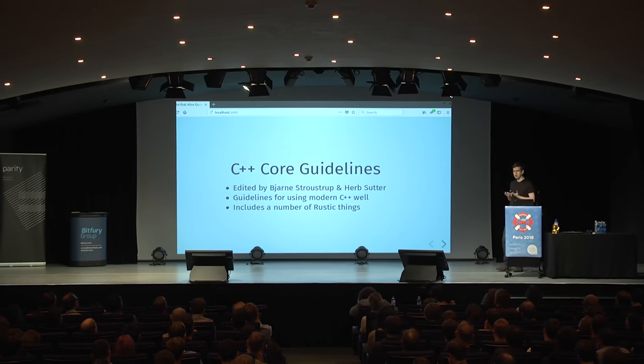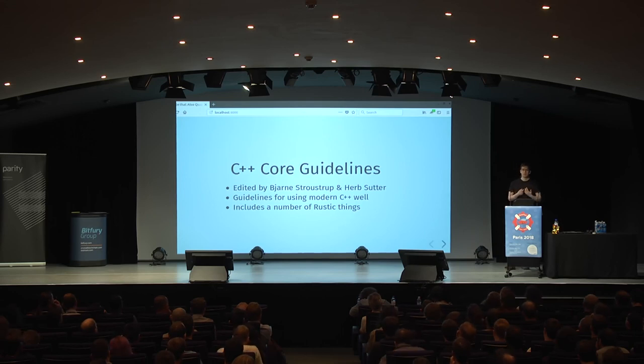When looking at these guidelines, we see that it includes a number of rustic things. I'm not saying C++ gets those things from Rust — both languages draw from the same inspirations — but the conclusion remains that if we want to provide a modern C++ API to a Rust crate, we should be trying to recreate the Rust API using C++ types on the other side of the FFI. This way we'll end up with a C++ API that's more modern than the API of a typical C++ library.